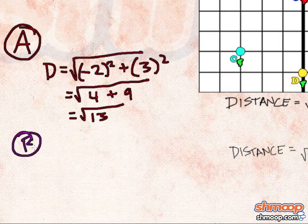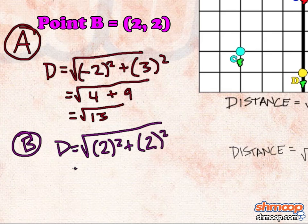The coordinates of point B are 2 and 2, making the distance the square root of 8.